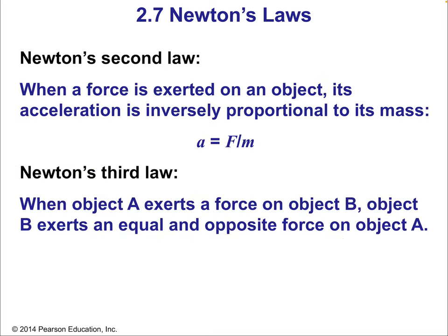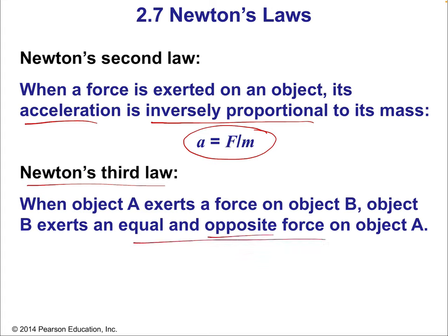Newton's second law, known as the law of acceleration, says when a force is exerted on an object, its acceleration — its change in speed — is inversely proportional to its mass. In other words, you have to push harder on large things to get them moving. Newton's third law, known as the law of force pairs or the equal and opposite law, says that when object A exerts a force on object B, object B exerts an equal and opposite force on object A — opposite meaning opposite in direction.